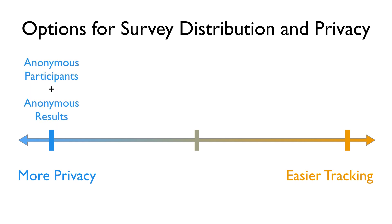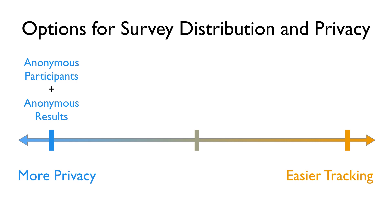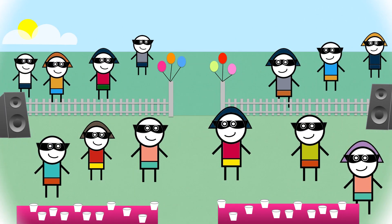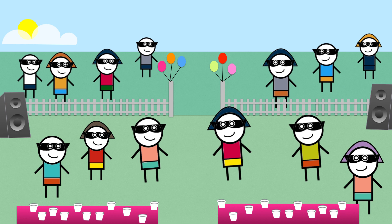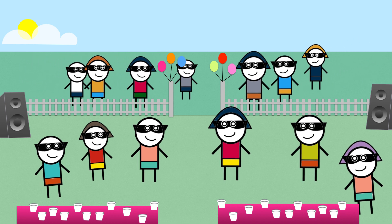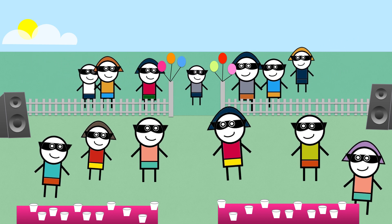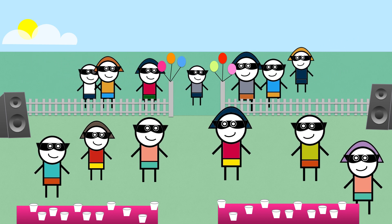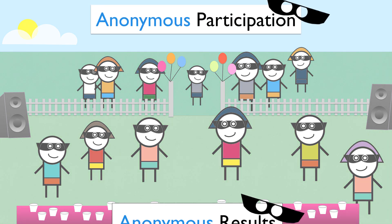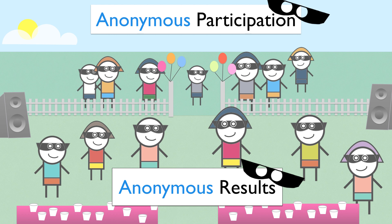At the high privacy end of surveys, the most common type of survey distribution is this simple anonymous email link, which provides the easiest way to get the most responses and gives the most privacy for respondents. It's like hosting a costume party that's totally open to the public — it's the easiest way to get a big crowd, but nobody knows who anybody else is.